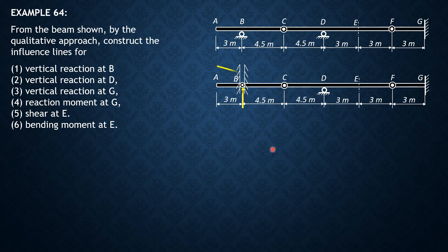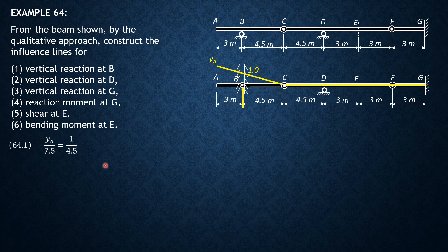The ordinate at B would be equal to 1, and that portion remains horizontal. Let's call this YA. By similar triangles: YA is to 7.5 equals 1 is to 4.5. Solving for YA: YA equals 7.5 over 4.5, which is 15 over 9, or 5 thirds. So that's the influence line for vertical reaction at B.